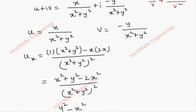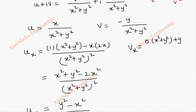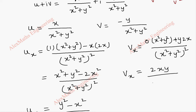Now coming to v, let's find vx, treating y as a constant. The derivative of -y becomes 0, so the first term is 0. Then minus u (which is -y) times v', where v' with respect to x is 2x. Applying the quotient rule, vx = 2xy / (x² + y²)².